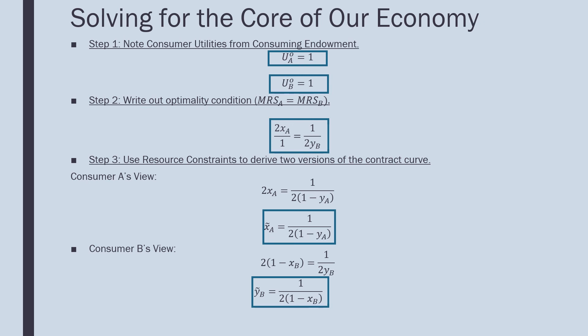Step three: use the resource constraint to derive two versions of the contract curve. From consumer A's perspective, X_A equals 1 over (2 minus Y_A). From consumer B's perspective, using the resource constraint, the contract curve equals 1 over 2Y_B.